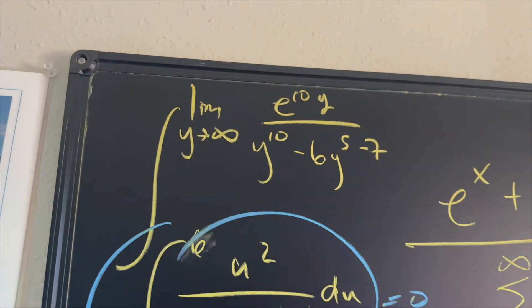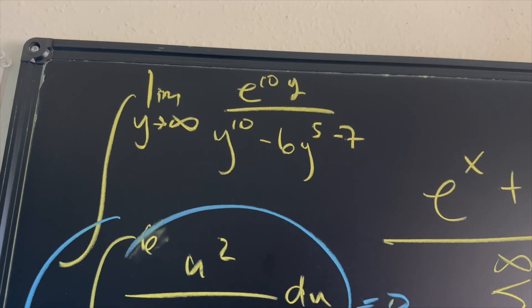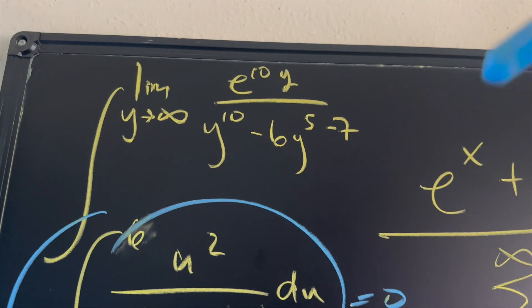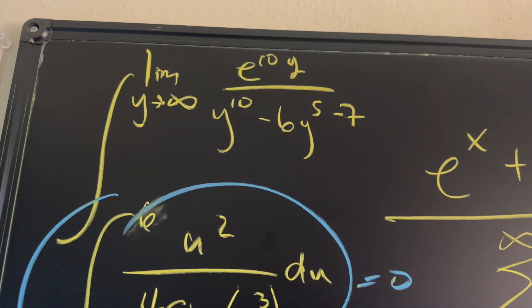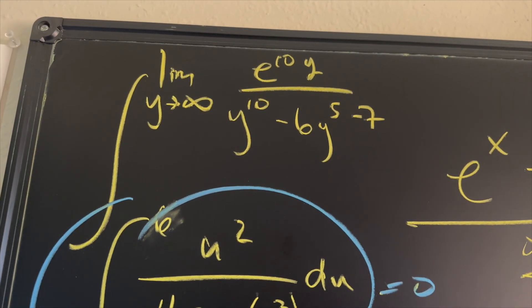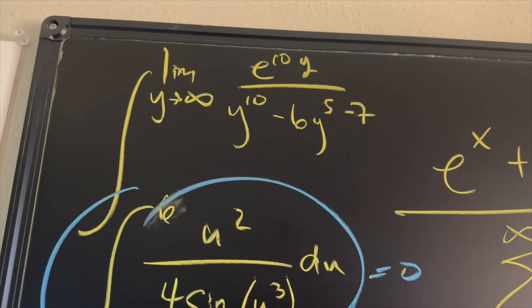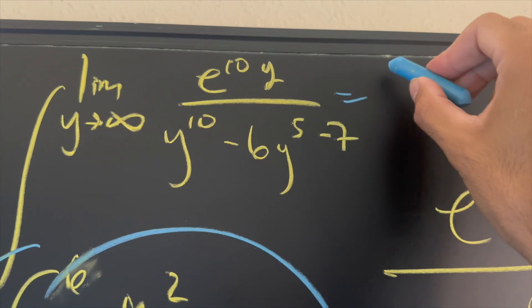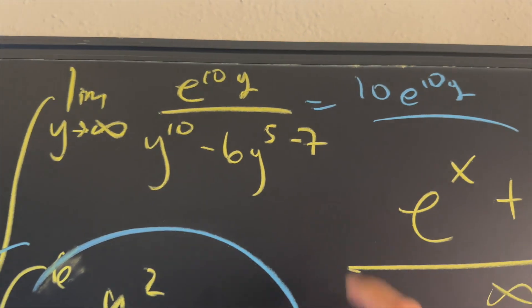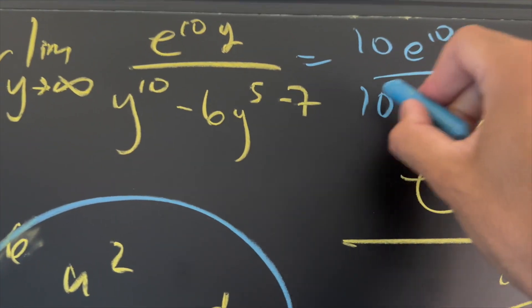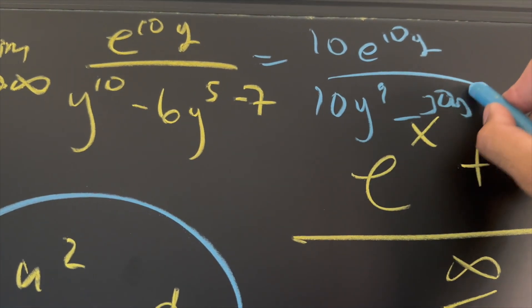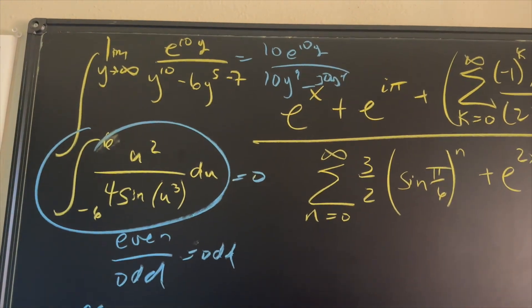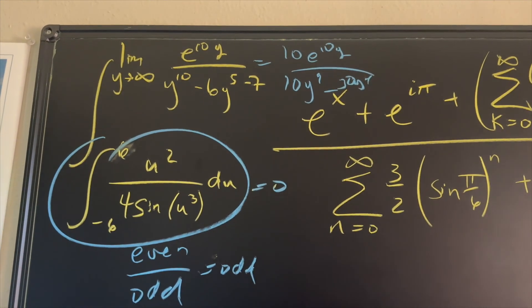So let's go ahead and get started up on top. Well, we have a limit as y approaches infinity. And you might think, let's go ahead and use some direct substitution where you're going to get infinity over infinity on the top and on the bottom, which tells us that we can use L'Hopital's rule. And that's exactly what you're supposed to do. But one of the things that you're going to see is the top, if you take, for example, the derivative one time, you're going to get 10e to the 10y, which is great. But then on the bottom, you get 10y to the ninth minus 30y to the fourth. And it's just going to become a little more complicated. Well, you're still going to get infinity over infinity. So guess what? You have to take L'Hopital's rule multiple times.